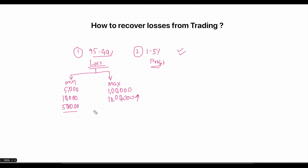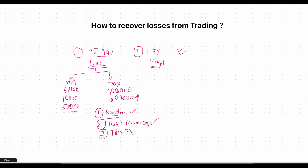Why do the majority of retail traders end up in loss? There are three reasons. One: they do random trades — they do not have a proper setup and just take random buy or sell positions, causing huge losses. Two: they do not have proper risk management, which is one of the most important things in the stock market. Three: they do not give time to the market — they fall for tips or calls that many people provide, take a trade based on those, and make huge losses.